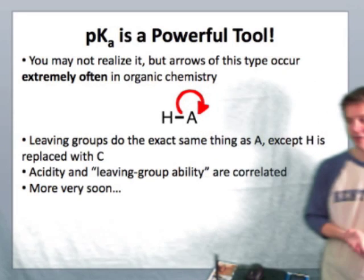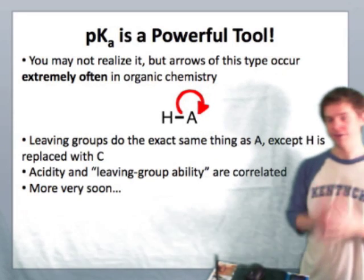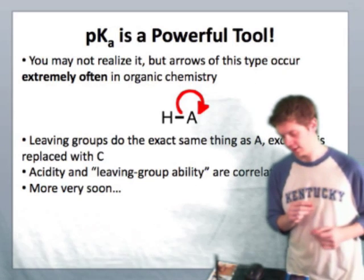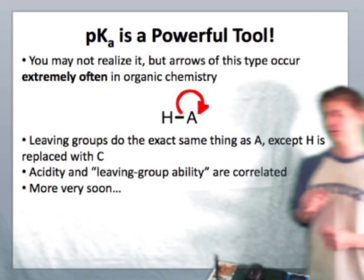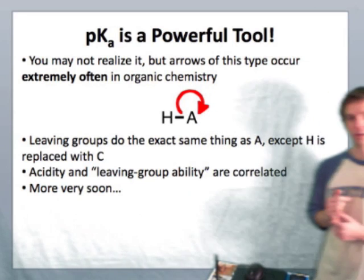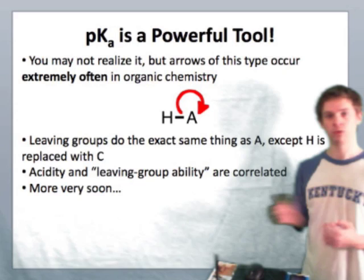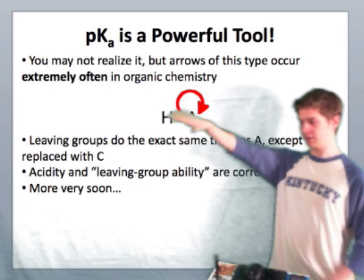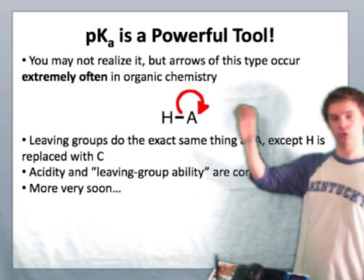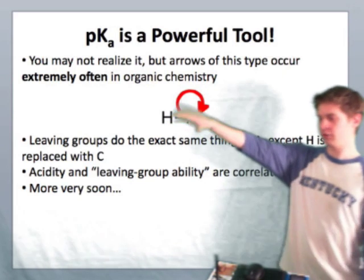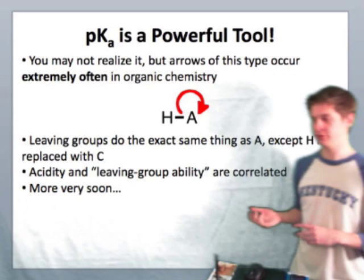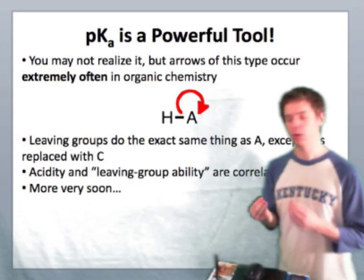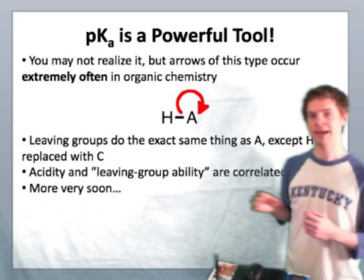And the last thing I'll say about pKa is that it's a very powerful tool. So you may not realize it, but there are other processes in organic chemistry that resemble the process of acidity. And we'll talk about this actually very soon when we talk about substitution. But this particular arrow where we're taking the electrons in a bond and giving them to an atom is essentially the process of acid dissociation distilled to its essence. So we can replace H and A with different atoms,